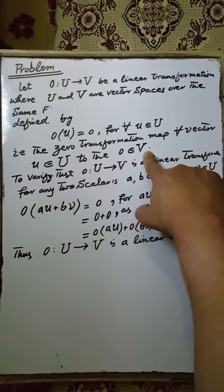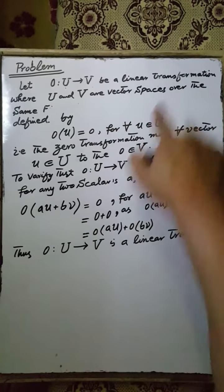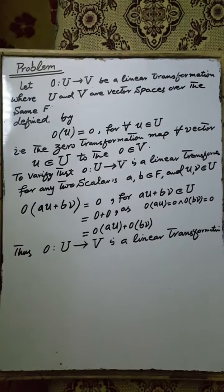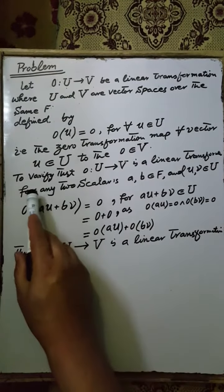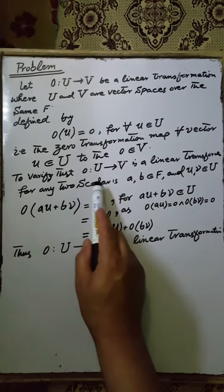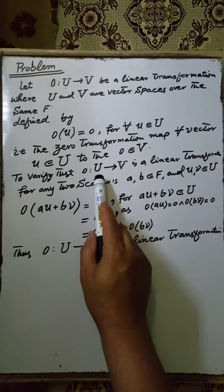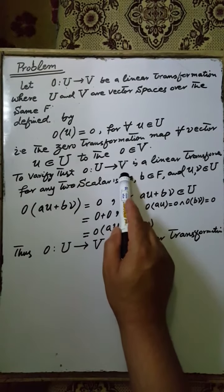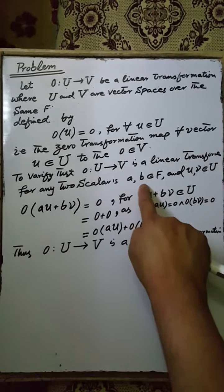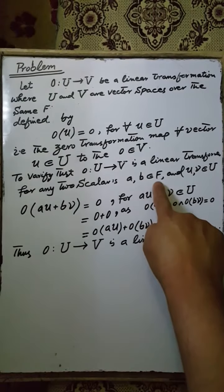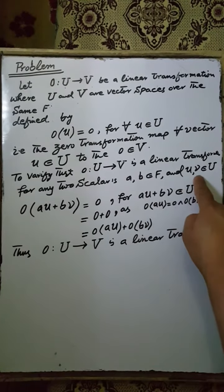First, we have to verify that the zero mapping is a linear transformation from the vector space U to the vector space V. The zero mapping is such that for any two scalars a, b in the field F and any two vectors u, v